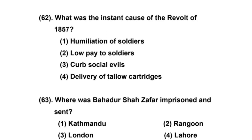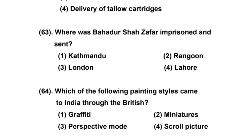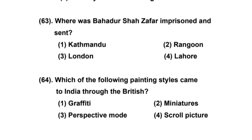What was the instant cause of the Revolt of 1857? Options: 1) Humiliation of soldiers, 2) Low pay to soldiers, 3) Curb social evils, 4) Delivery of tallow cartridges. The right answer is option 4 — Delivery of tallow cartridges.